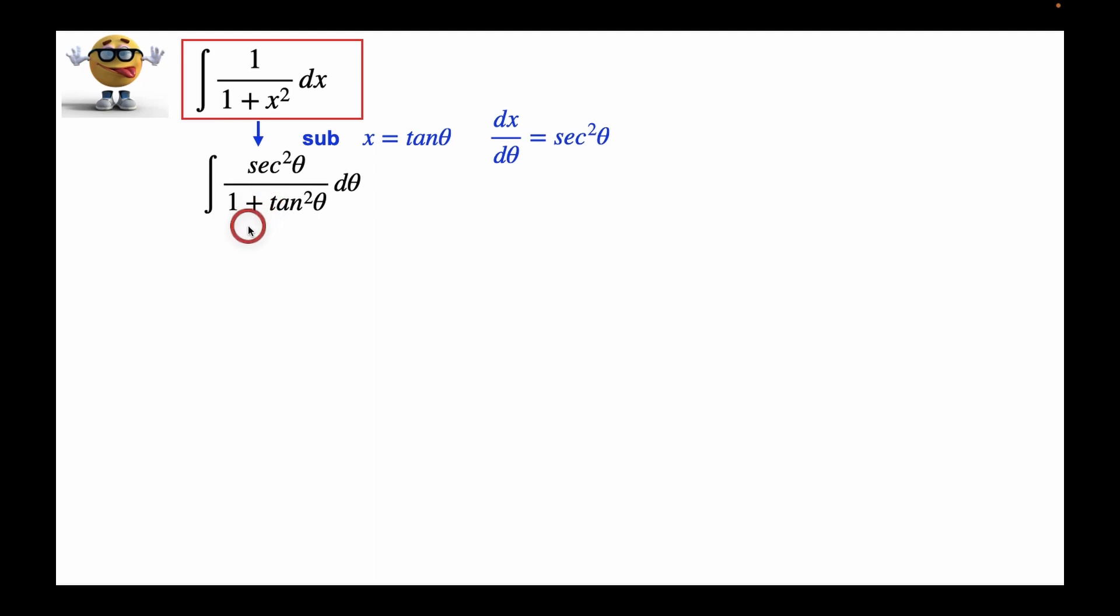Now we're going to invoke a popular trig identity: tan squared plus 1 equals secant squared. And if we do that, we get, I mean check this out, secant squared theta divided by secant squared theta. That's fun, that cancels.